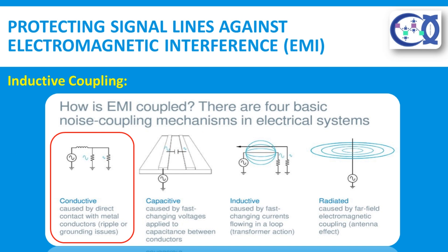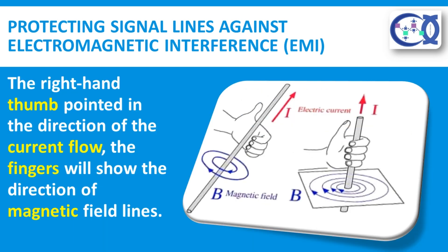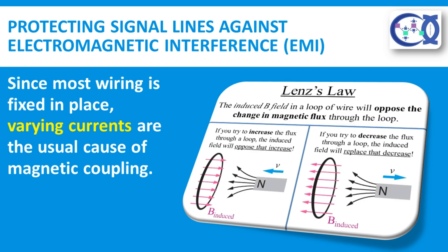Now we will talk about inductive coupling. When a cable carries current, a magnetic field is generated. The direction of this magnetic field for current flowing in a long straight wire can be visualized using the right-hand rule: with the right-hand thumb pointed in the direction of current flow, the fingers will show the direction of the magnetic field lines. Lenz's law states that currents can be made to flow in conductors by moving them through a magnetic field. Similarly, a changing magnetic field will induce currents in a stationary conductor within the field. Since most wiring is fixed in place, varying currents are the usual cause of magnetic coupling.